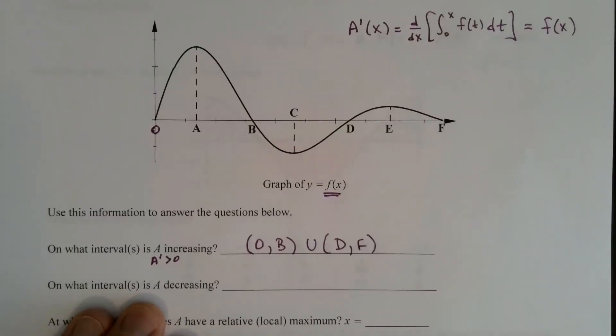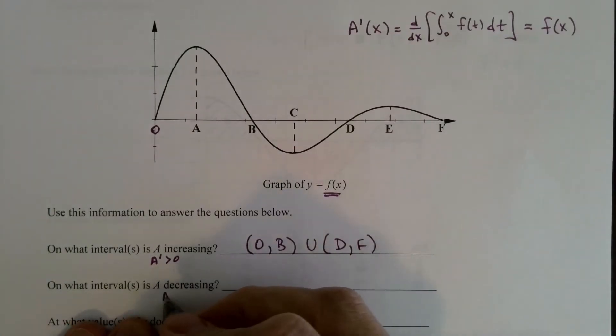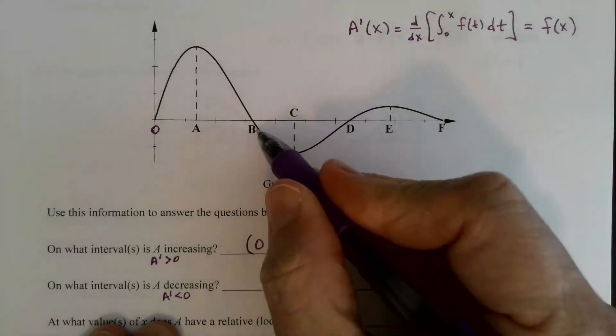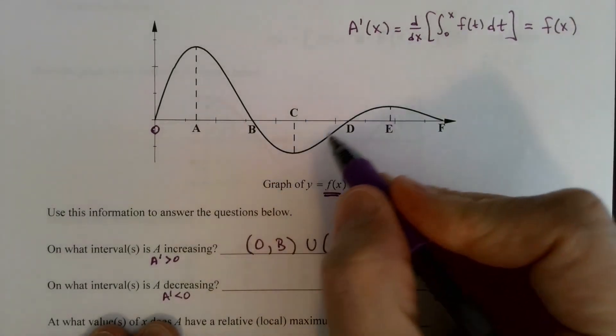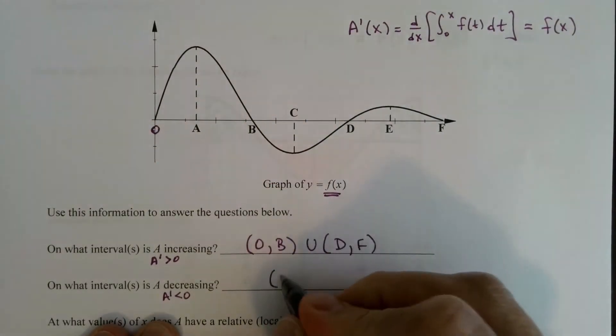On what intervals is A decreasing? That's where the derivative is less than zero — where f is below the x-axis — and that's from B to D.